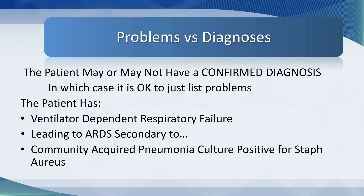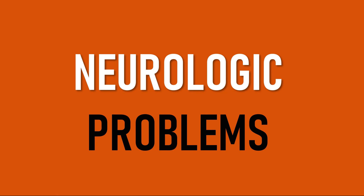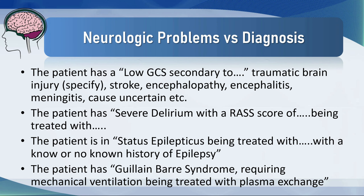But you're not going to say that from the outset. You'll just say the patient has vent-dependent respiratory failure. Now let's look at the various different systems and the problems patients may have in each system. We start with neurologic problems. Sometimes the diagnosis is slow to emerge, so you will say the patient has a low Glasgow Coma Score. At the beginning you might not know the reason for it — it may be caused by traumatic brain injury, and then you would specify the reason, mechanism, or pathology: stroke and encephalopathy, encephalitis, meningitis, or maybe the cause is just uncertain, maybe it's due to toxicology. The patient has severe delirium with a Richmond Agitation Sedation score of plus something, and the patient is being treated with the following drugs. The patient is in status epilepticus being treated with specific drugs with a known or unknown history of epilepsy.